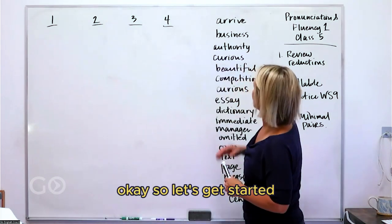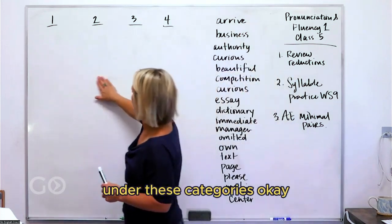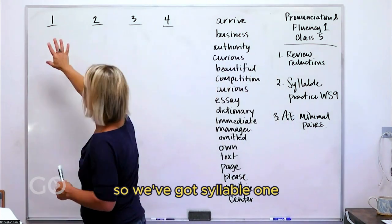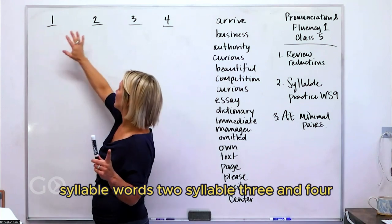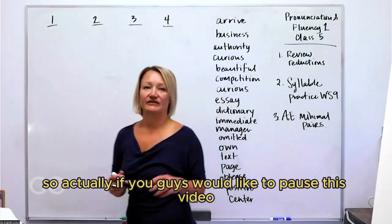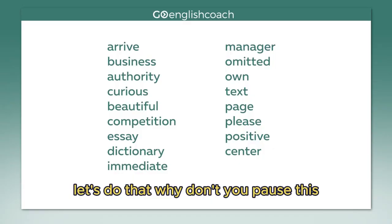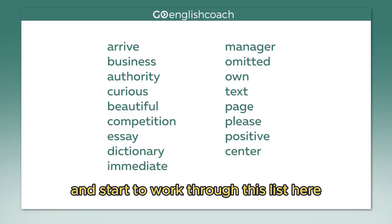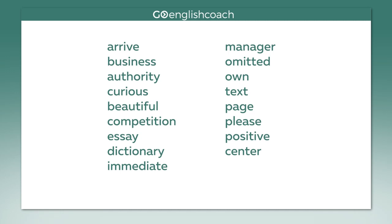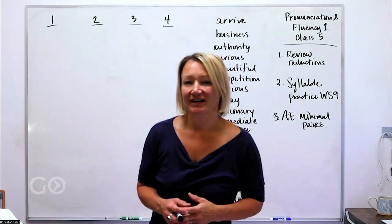Okay, so let's get started. We're going to put all of these words over here under these categories. We've got one syllable words, two syllable, three and four. So actually, if you guys would like to pause this video, let's do that. Why don't you pause this and start to work through this list here. Okay, how did everybody do? All right, let's get started.